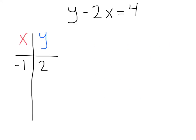Next, why don't we go with zero. Plug that in, and we'll get y minus two times zero equals four. Solving, we're going to get a y value of four.